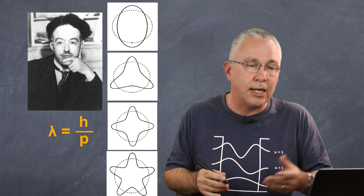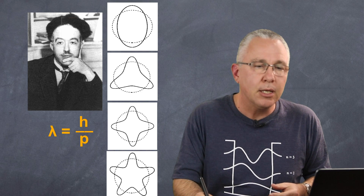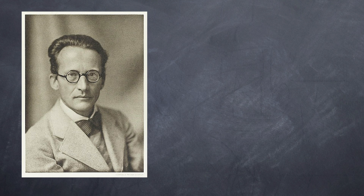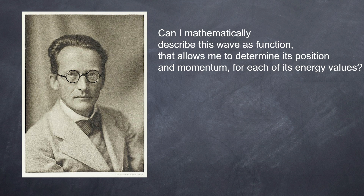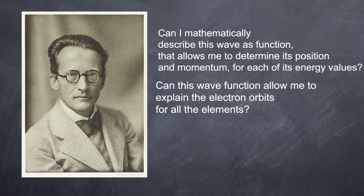And so that is our understanding of de Broglie. But then is where Schrödinger comes in. He really asks two questions. The first is: if it is a wave, then can we use mathematical functions to describe these waves that exist in terms of the electrons around them? And therefore, from this, can we extract information such as their momentum and their energy values? Secondly, can this function then explain all the orbits that the electrons exist in, not only for hydrogen, but also for other atoms as well?